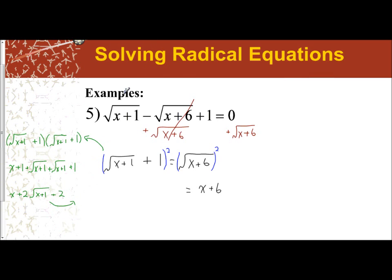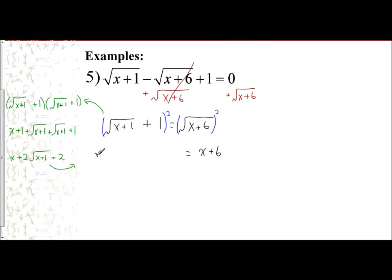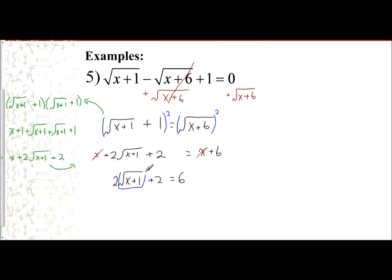So on the left side we have x plus twice the square root of x plus one plus two. Now I notice there is an x on both sides — if I subtract x from both sides they cancel. So I'm only dealing with the equation: twice the square root of x plus one plus two equals six. The whole point is to isolate this radical. You cannot take anything outside of it until you square it, but you can't square it until it's isolated.